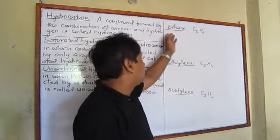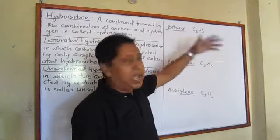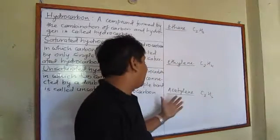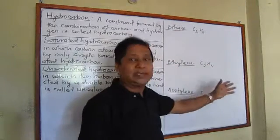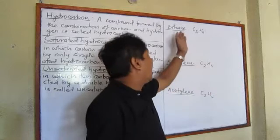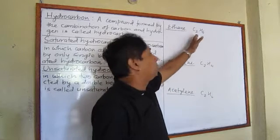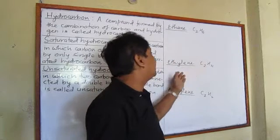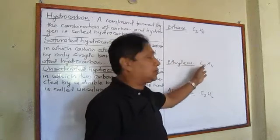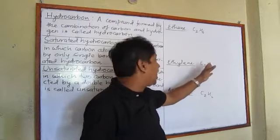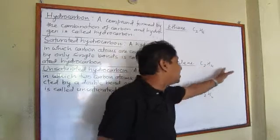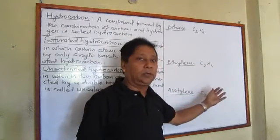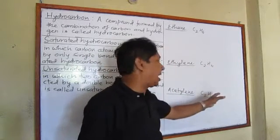Look at this. Ethane is a hydrocarbon, ethylene is another hydrocarbon, acetylene is another hydrocarbon. Ethane's molecular formula is C₂H₆, ethylene's molecular formula is C₂H₄, and acetylene's molecular formula is C₂H₂.